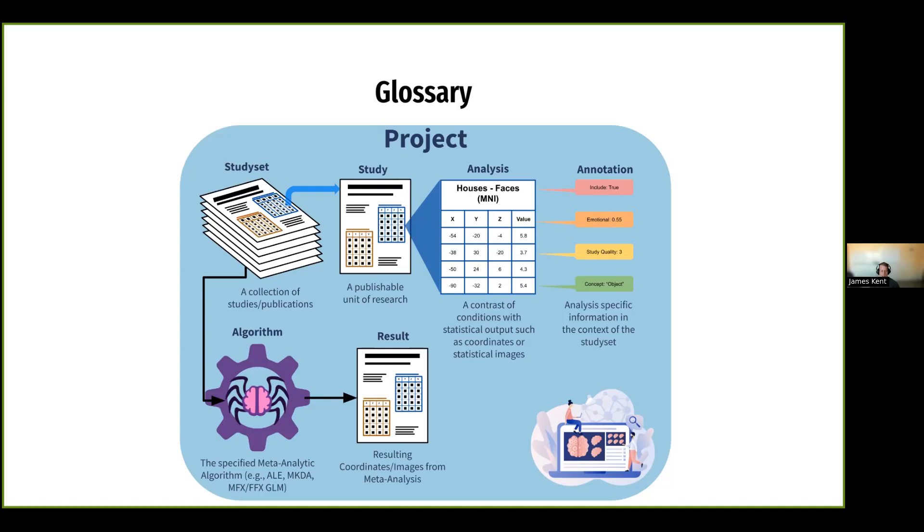you can specify a meta-analytic algorithm from NIMAR, which is the Neuroimaging Meta-Analysis Research Environment. And from NIMAR, you can select many of the commonly used meta-analytic algorithms. And from there, you can produce a result, which will also include peak coordinates of convergence and statistical maps that are associated with that output, which can then be used as another citable unit of research.